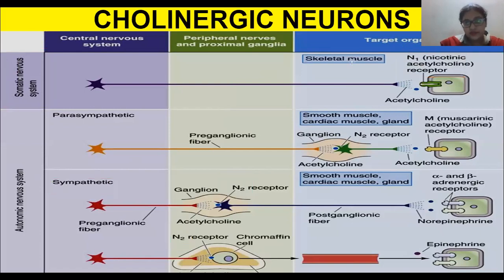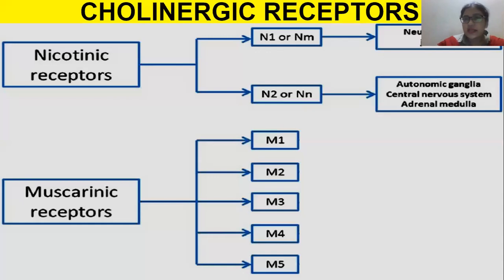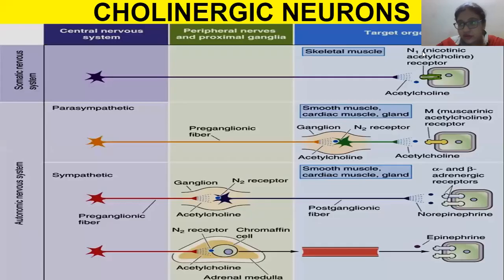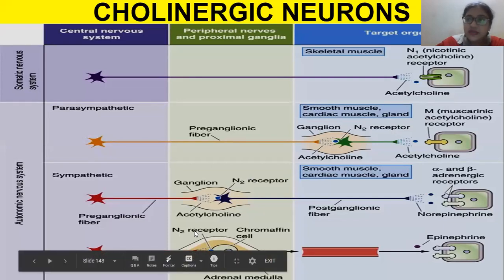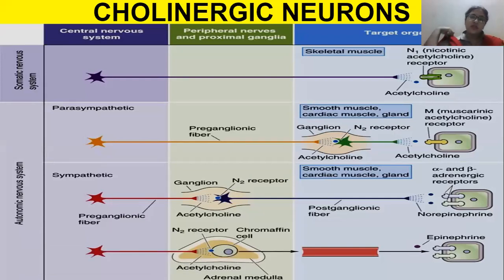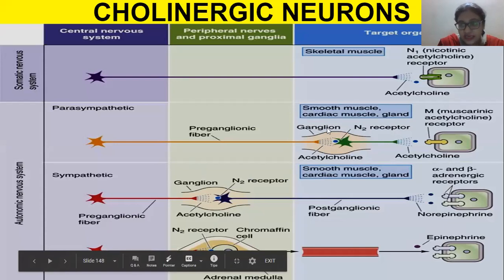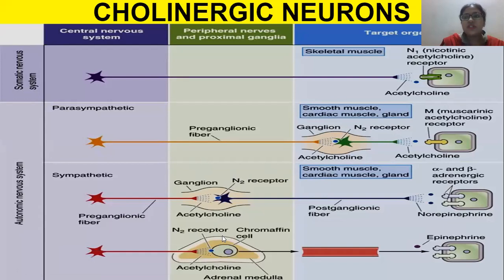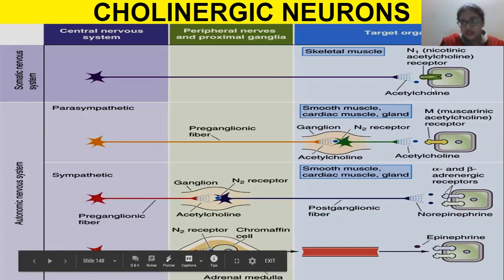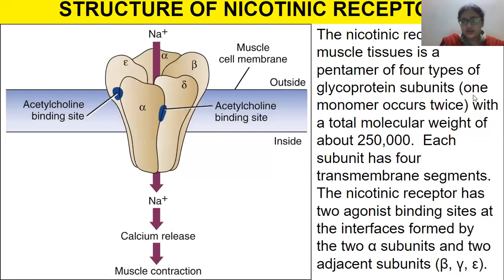N1 is at the neuromuscular junction. N2 is found at ganglia and within the adrenal medulla. So wherever there is a ganglion, we have N2 receptors; at the neuromuscular junctions, we have N1 receptors.